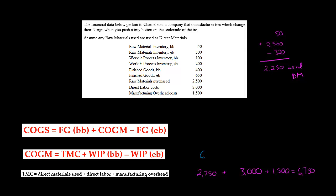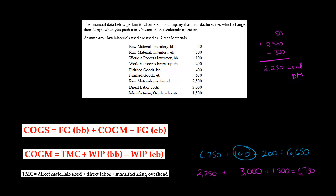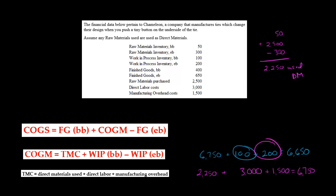Now we're going to plug $6,750 in to calculate cost of goods manufactured. We take $6,750, then add the beginning work in process of $100, and subtract the ending work in process of $200. That gives us $6,650, which is our cost of goods manufactured — the cost of all goods completed during the period. The $100 beginning WIP represents manufacturing costs from a prior period; we add those, add costs from this period, then subtract anything still in process at period end.